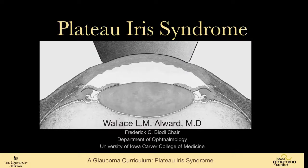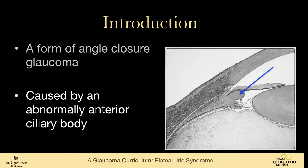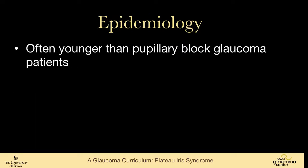We're going to talk about plateau iris syndrome, a form of angle closure glaucoma that's caused by an abnormally anterior ciliary body. You can see in the picture on the right this ciliary body that's holding the iris up towards the trabecular meshwork.